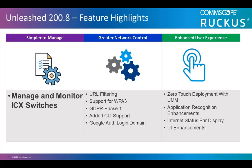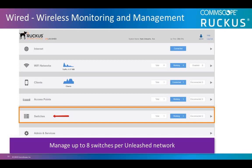Here we show the three major categories of feature highlights: simpler to manage, greater network control, and enhanced user experience. As of release 200.8, you can now manage and monitor ICX switches. This is great for our partners and resellers who can now sell both our access points and our ICX switches. You can manage up to 8 ICX switches on an Unleashed network. The ICX switches work seamlessly with Ruckus Unleashed access points to deliver enterprise-class wired and wireless management for small organizations. You can gain insights into switch port connectivity, upgrade your switch, and perform backup and restore from the Ruckus Unleashed dashboard or your mobile app.